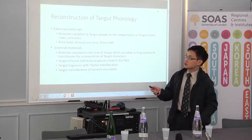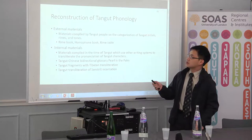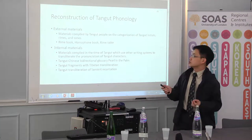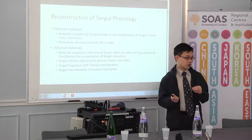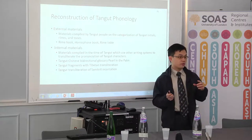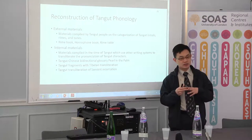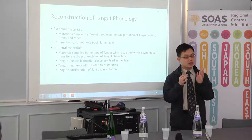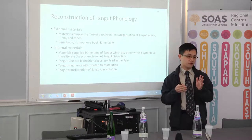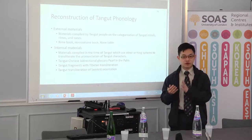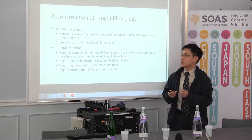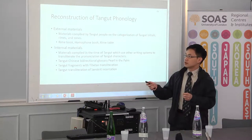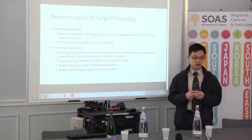One is the external materials, which is compiled by Tangut people on the categorization of Tangut initials, rhymes, and tones. So it provides a framework for us to know how many categories there are, for example for the initials, for the rhymes, and for the tones. So there are rhyme books, homophone books, rhyme tables, et cetera.